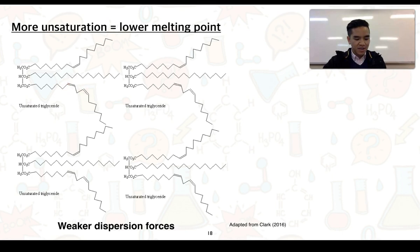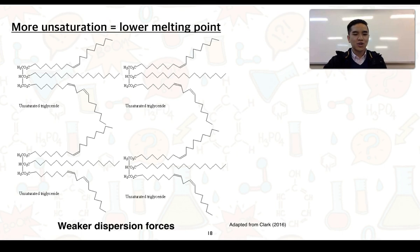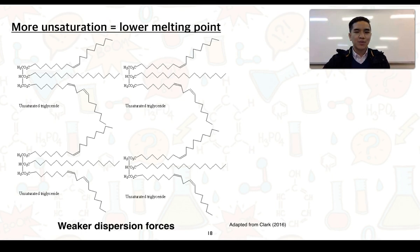These kinks make it more difficult for the triglycerides to arrange themselves closely to one another, which reduces the strength of the dispersion forces, resulting in a lower melting point. So the greater the unsaturation, the lower its melting point. In terms of the words fats and oils, fats are typically assigned to triglycerides that are solid at room temperature, while oils are triglycerides that are liquid at room temperature.